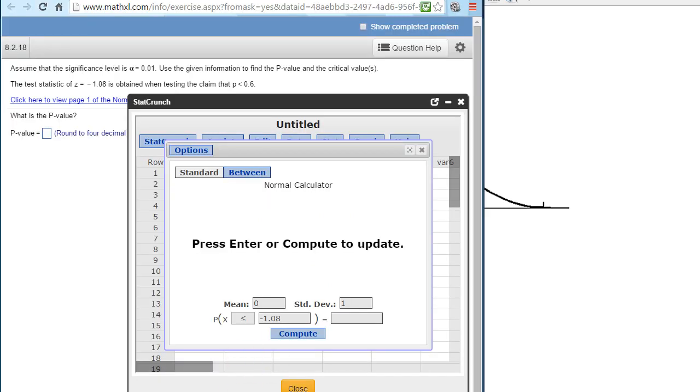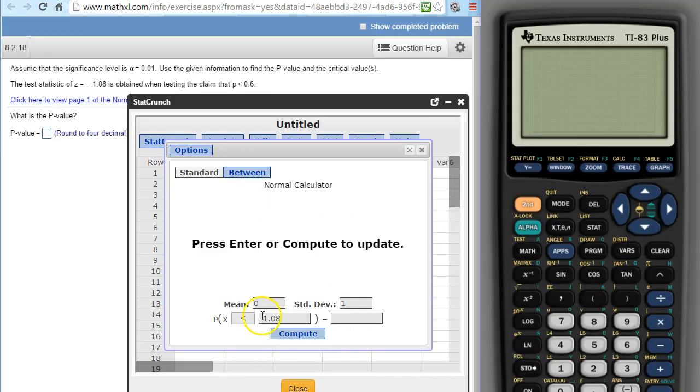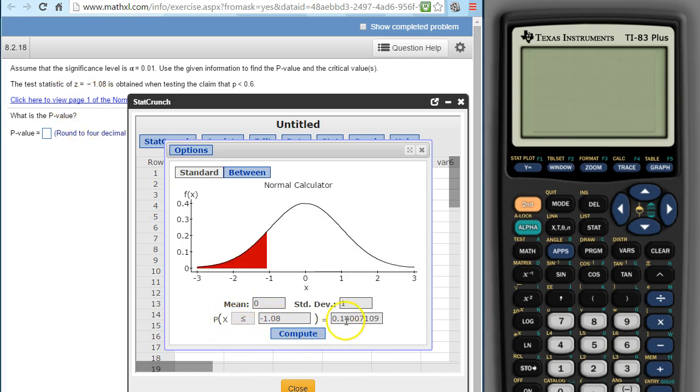So going back to StatCrunch, that's what we're looking for. We're looking for the probability that we're less than negative 1.08, and there's our number. So 0.1401, or to four places, 0.1401.